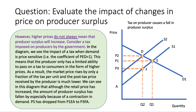Lots of people think that the only way for firms to get more producer surplus is to increase price. However, in evaluation, higher prices do not always mean that producer surplus will rise. One way of showing this is to think about the impact of a tax on a producer. In the diagram we see the effect of a specific tax on the supply side of the market when demand is price sensitive — in other words, demand is relatively price elastic, with a coefficient greater than one.